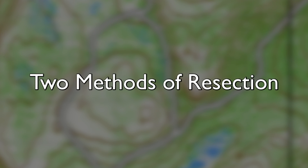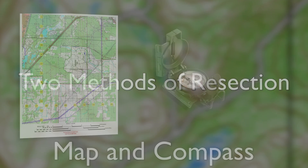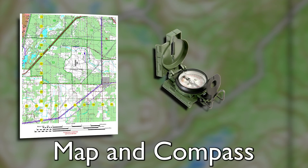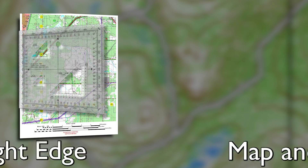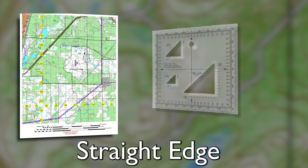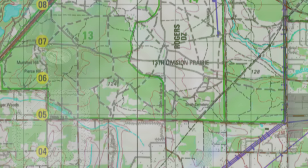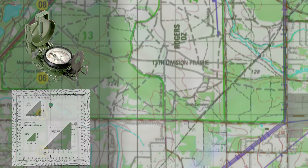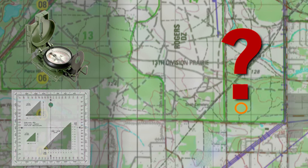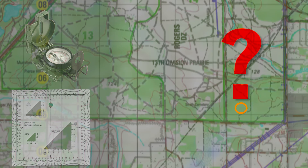There are two methods of resection: map and compass, and straight edge. Both techniques allow you to locate a point that you do not know the coordinates of.